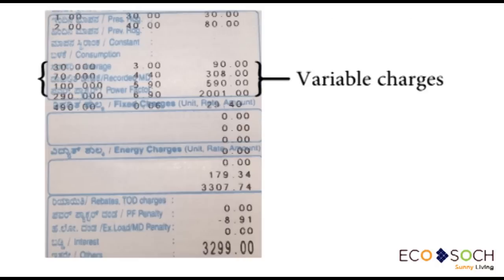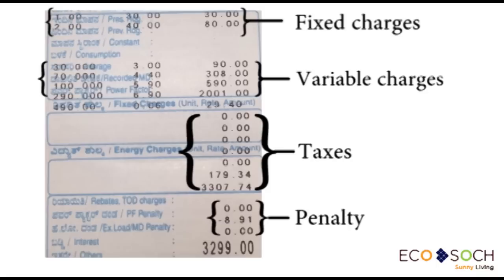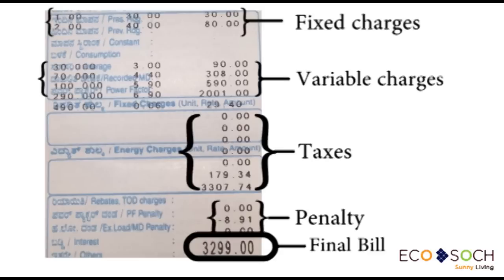Consumers are charged under different slab rates based on their consumption. With the increase in consumption, the slab rates also vary. After adding the fixed charges, variable charges, taxes, and penalties, ESCOM or Energy Supply Company prints out the final amount payable.